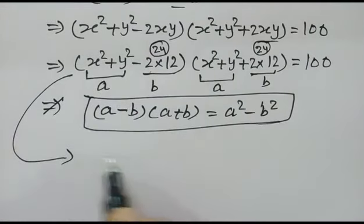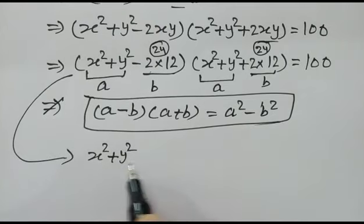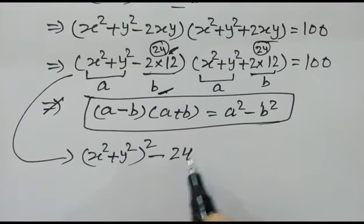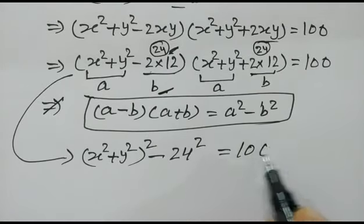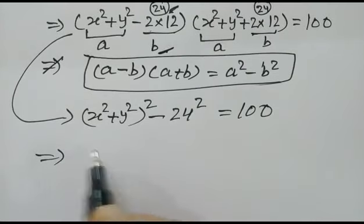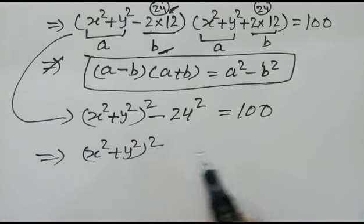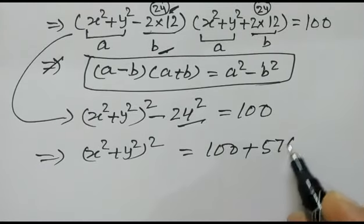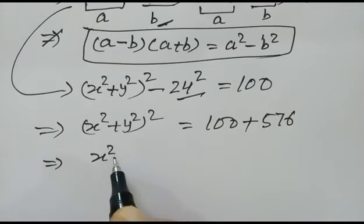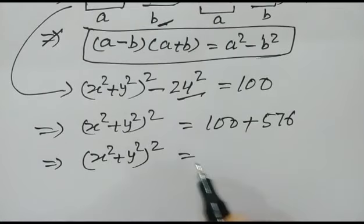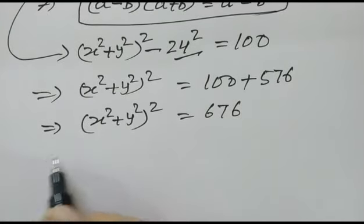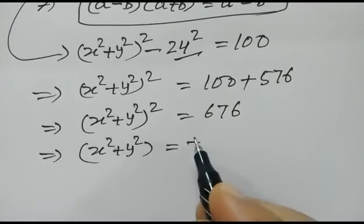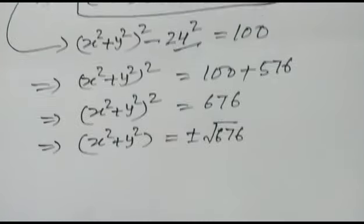So (x squared plus y squared) squared equals 100 plus 576, which equals 676. Therefore x squared plus y squared equals plus or minus the square root of 676, which gives x squared plus y squared equals plus or minus 26.